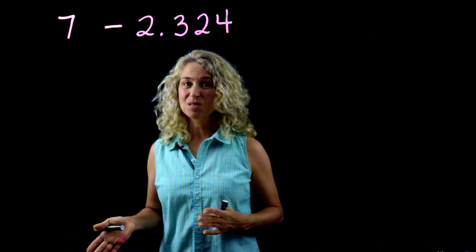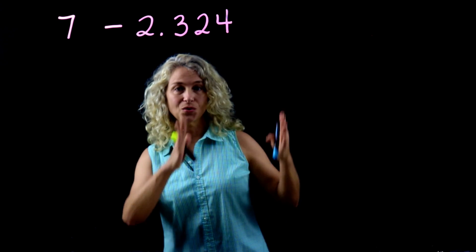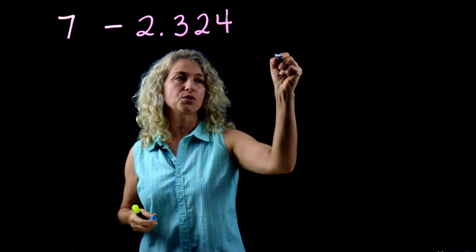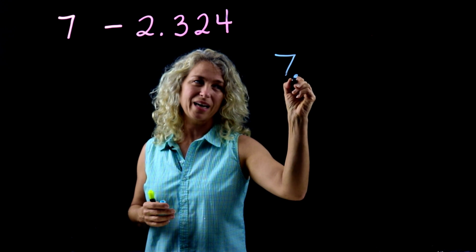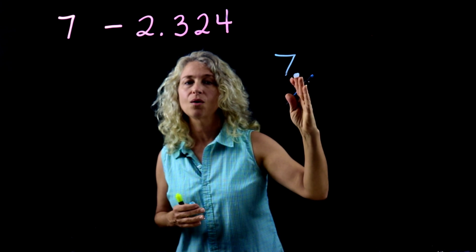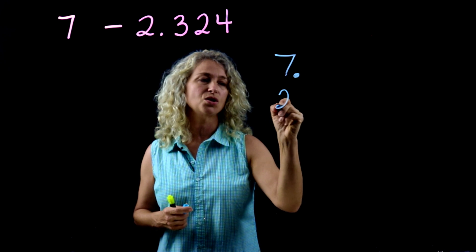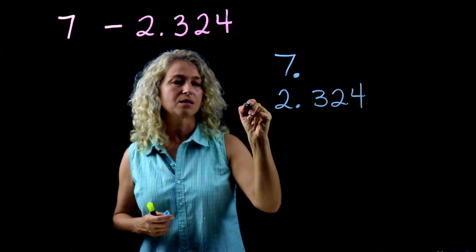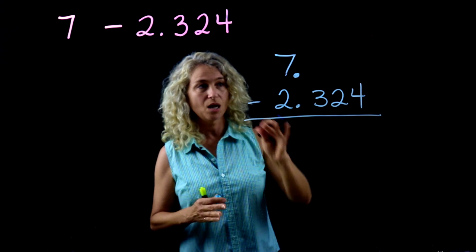Here's our last example — it looks a little different. You still write it vertically. You need to know where your decimal is when it's not shown; it's always to the right of the whole number. Seven is greater than two and three hundred twenty-four thousandths, so seven goes on top.